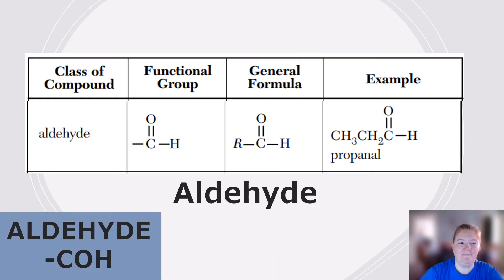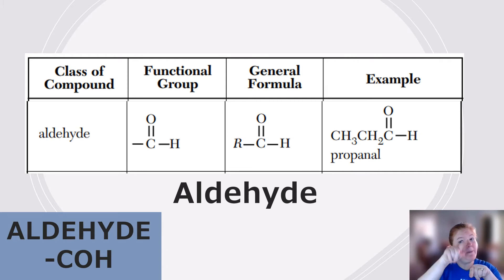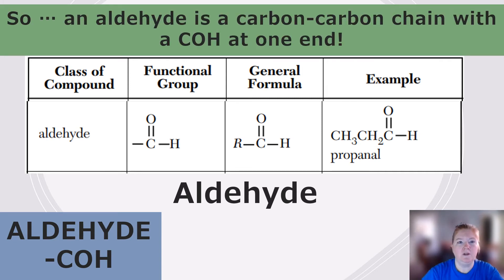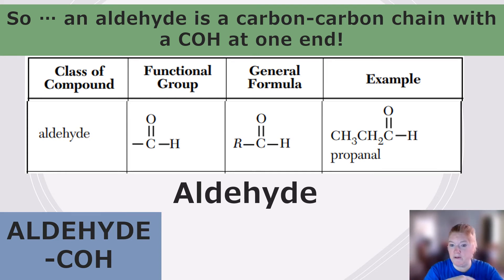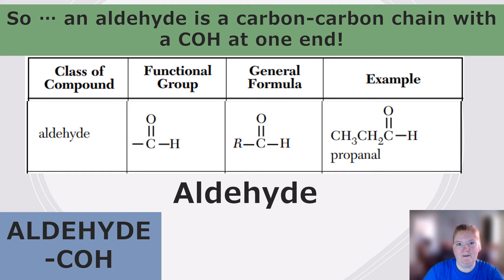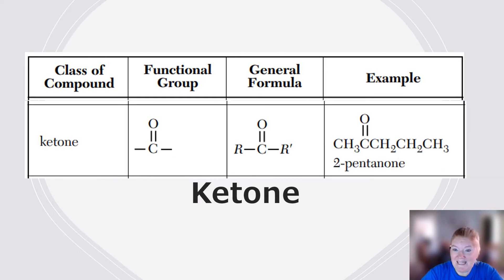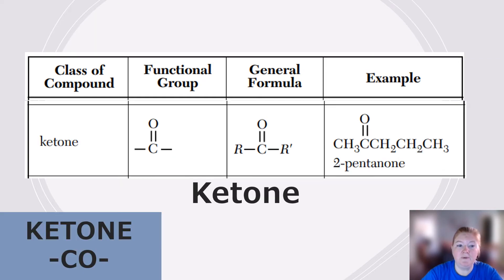Aldehydes have a functional group of C double bond O, with an H attached — written as COH. An aldehyde is a carbon chain with a COH at one end. Notice there's no address or number, because it's always at the end carbon, which is always carbon number one. It's always in the same place.